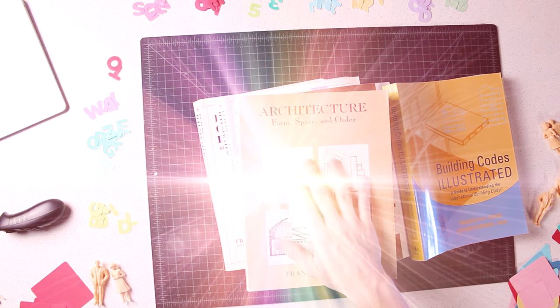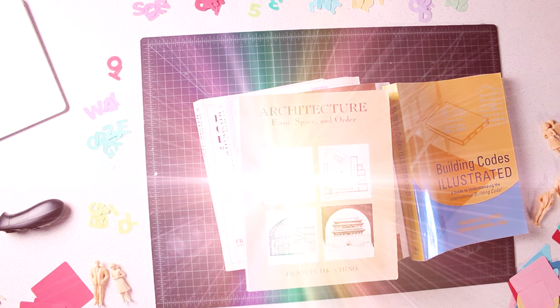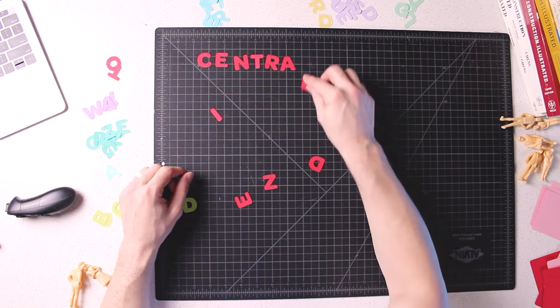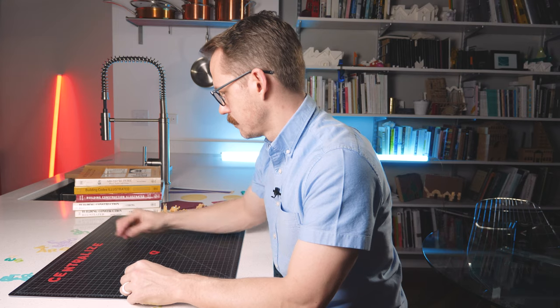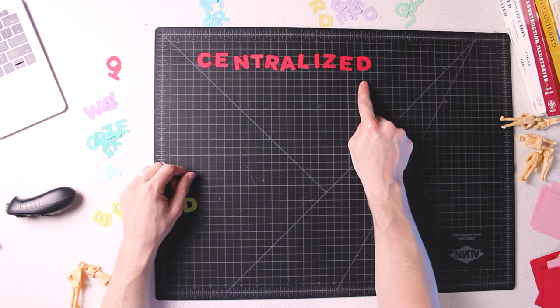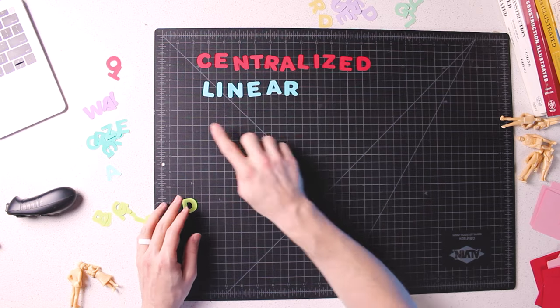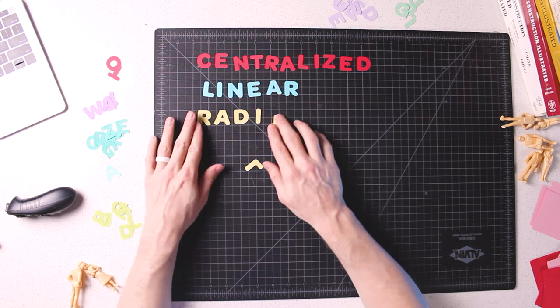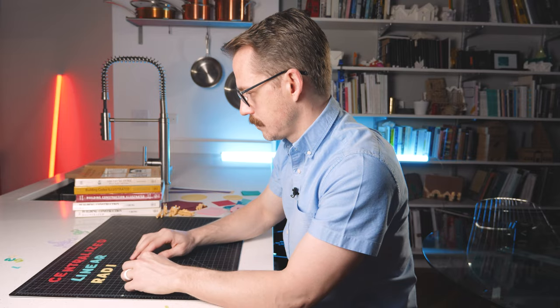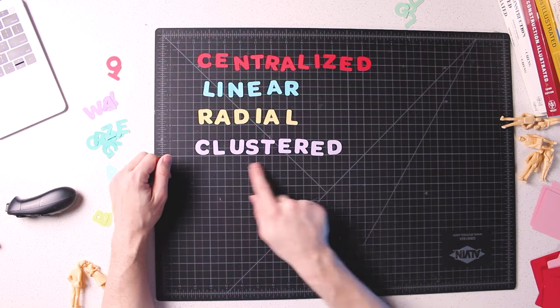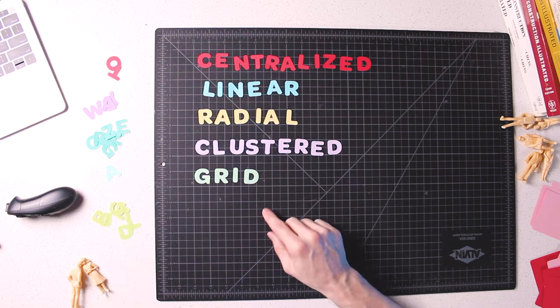Within the pages of this almost — dare I say — biblical work, we find five essential ways to organize space, and they are: centralized, linear, radial, clustered, and grid.